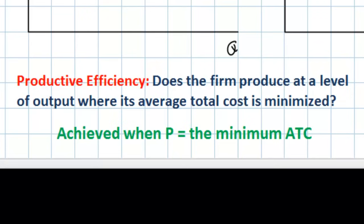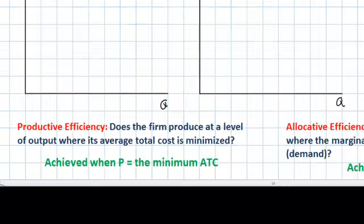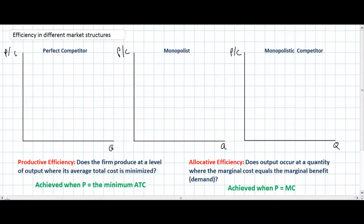Sometimes this type of efficiency is referred to as technical efficiency, indicating that the firm is producing its goods in the most efficient way possible, minimizing its average total costs. Productive efficiency assures that the good's price will equal the minimum average total cost. If the price is anything greater than the minimum average total cost, firms in an industry do not have an incentive to be productively efficient — they don't need to produce at the lowest ATC if they can sell at a higher price.